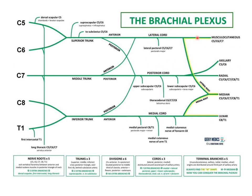From the lateral cord there are three branches: the lateral pectoral nerve supplying pectoralis major; the musculocutaneous nerve supplying biceps brachii, coracobrachialis, and brachialis; and the lateral root of the median nerve. From the medial cord the branches are: the medial pectoral nerve, medial cutaneous nerve of arm, medial cutaneous nerve of forearm, medial root of the median nerve, and the ulnar nerve. From the posterior cord: the upper subscapular nerve, thoracodorsal nerve, lower subscapular nerve, axillary nerve supplying deltoid and teres minor, and the radial nerve supplying all the extensor muscles of the arm and forearm.